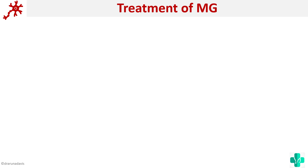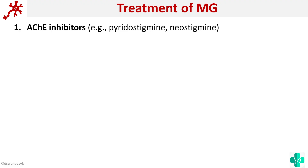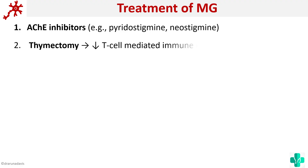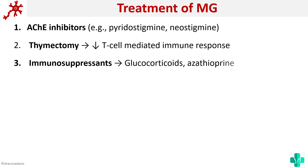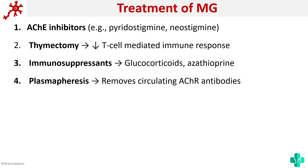How can you manage this condition? The problem is that the acetylcholine receptors are not there. So whatever acetylcholine is present, we can make it more long-lasting so that it can bind to whatever acetylcholine receptors are available. We can give acetylcholinesterase inhibitors like pyridostigmine, so that the half-life of acetylcholine can increase and it can bind to whatever receptors are present on the motor end plate. A second treatment option is thymectomy, to decrease the T-cell mediated immune response. To fight the antibodies, you can give immunosuppressants like glucocorticoids and azathioprine, and if the condition worsens, you can do plasmapheresis to remove all the circulating antibodies.